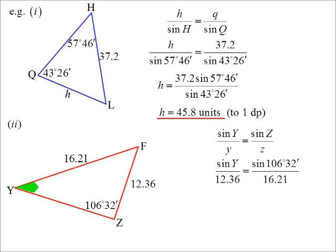Substitute in the given information. Again, multiply by the denominator to get rid of that. So 12.36 times the sine of 106°32'. Divide that by 16.21.